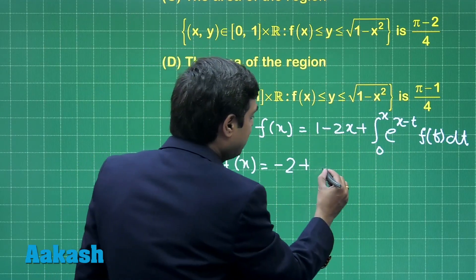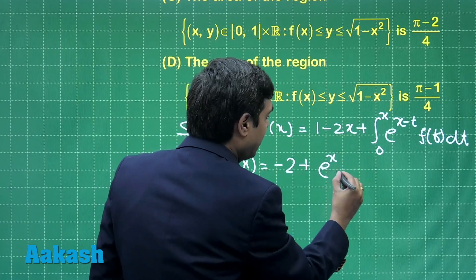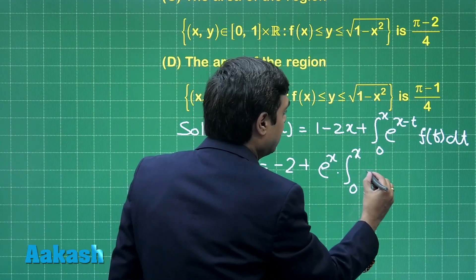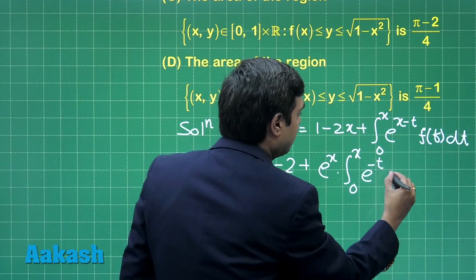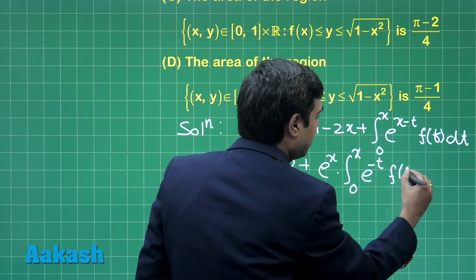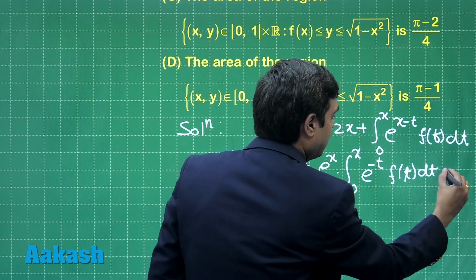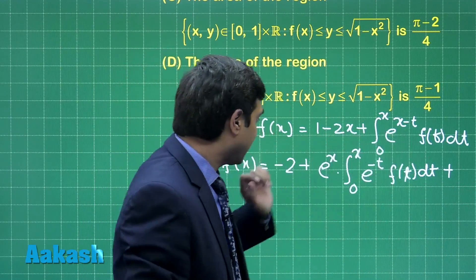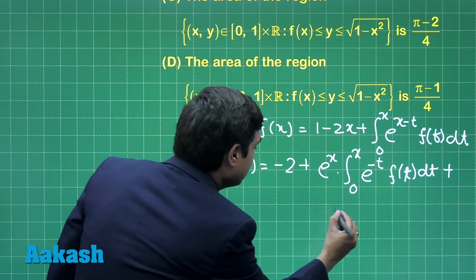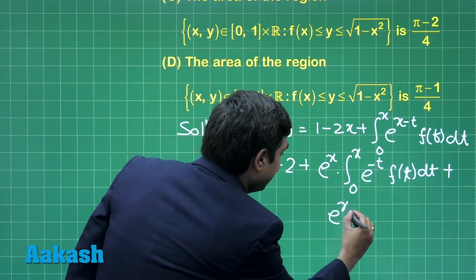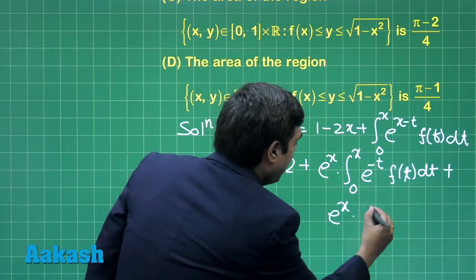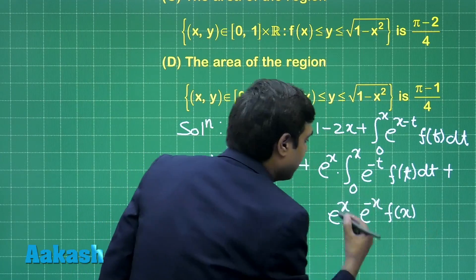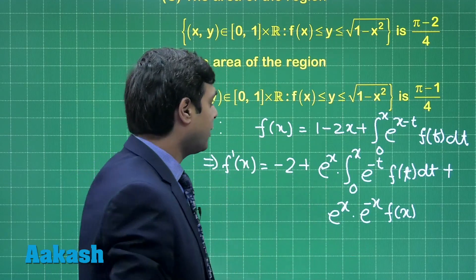First differentiating e^x, we simply get e^x times the rest of the function as it is, that is 0 to x e^(-t) f(t) dt, plus on the other hand we differentiate the second function, which gives us e^x times e^(-x) f(x). These two are cancelled out.